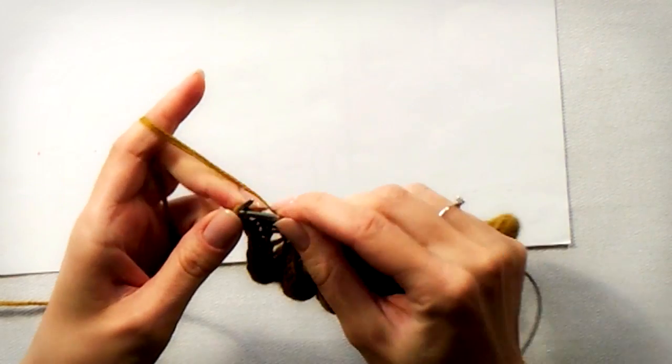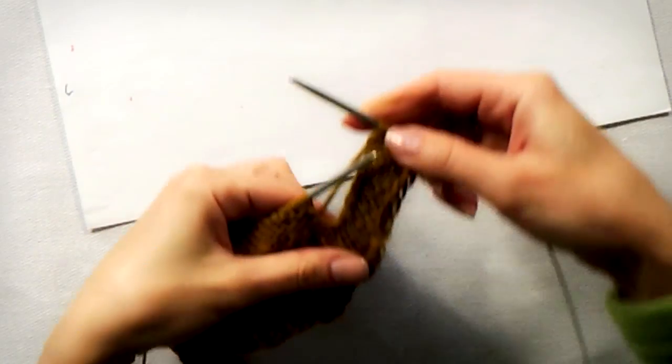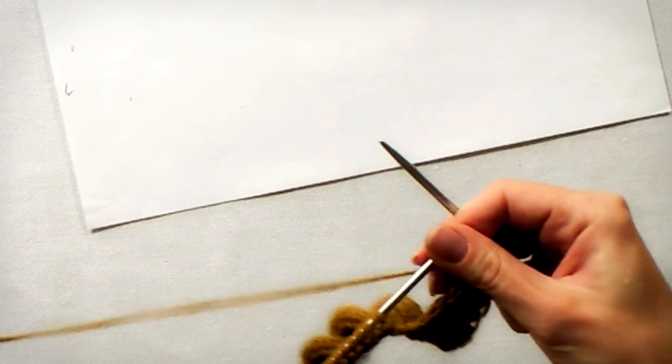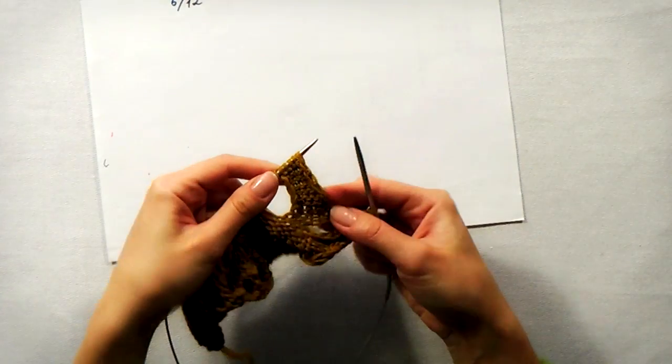Continue with knitting 12 rows of stockinette. Then purl 6, another 3, and continue knitting 12 rows of the next segment.